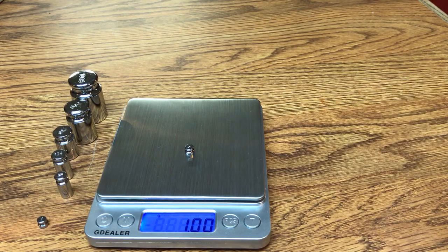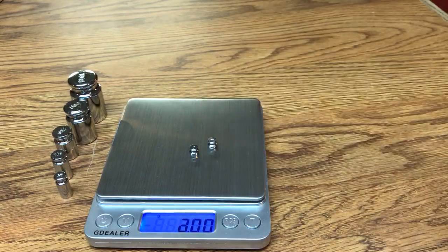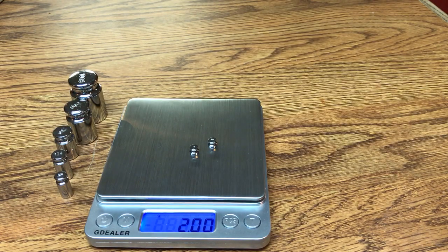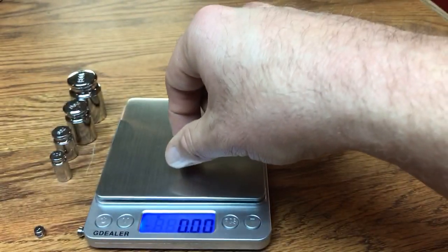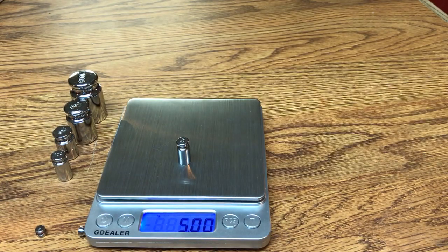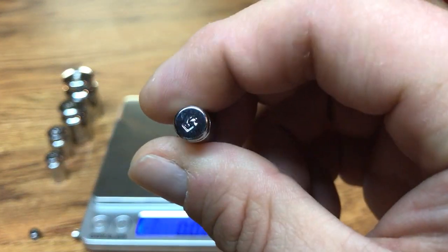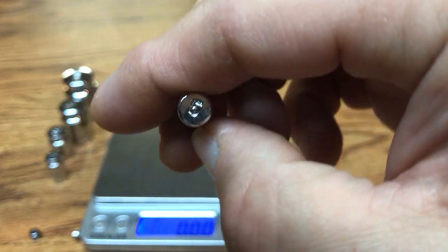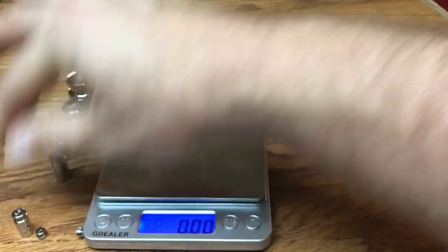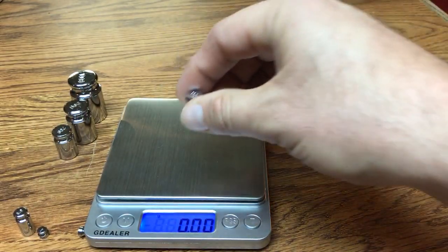How about if we put two on there? We go two grams, exactly what it's supposed to weigh. So let's do the next one. That's a five gram weight and that weighs five grams. There you go. Here is a ten gram weight and it weighs 10 grams.